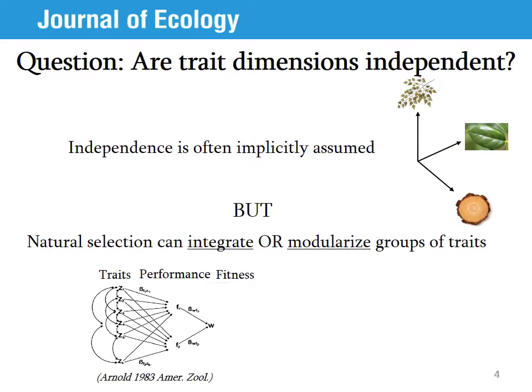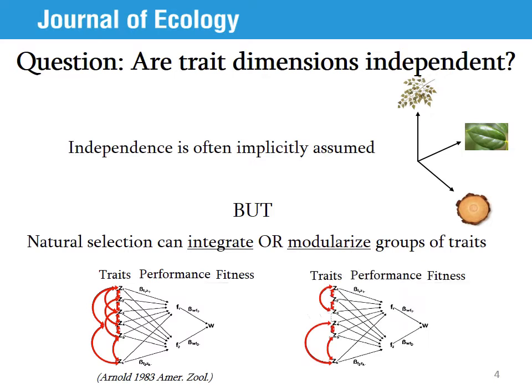Natural selection can act to either integrate or modularize groups of traits. In this classical diagram, we see that traits Z and their interaction affect plant performance F — for example, growth or survival — which in turn affects plant fitness W. The diagram on the left illustrates a scenario where it is beneficial for all the traits of a plant to be coordinated in their response to a selection gradient, leading to correlation among all those traits. In contrast, in the scenario on the right, it would be beneficial for only a group of traits to respond to the selection gradient, leading to modularity, or in other words, to independent trait dimensions.